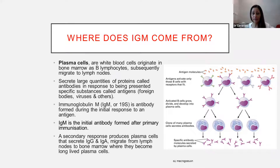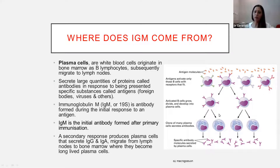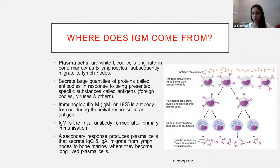These B lymphocytes migrate from the bone marrow where they are born to the lymph nodes. They get exposed to antigens there, to get educated and be told to produce large quantities of proteins called antibodies in response to foreign bodies, viruses, and other microbes that our body gets exposed to. So these cells are our defense system — they are our protectors. Immunoglobulin M or IgM is the antibody formed initially in response to exposure to the antigen.